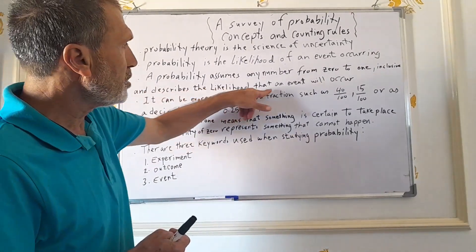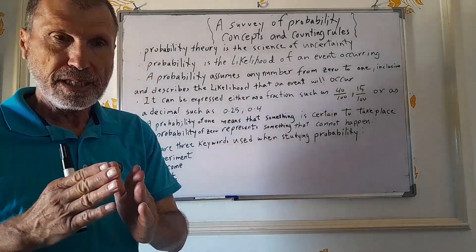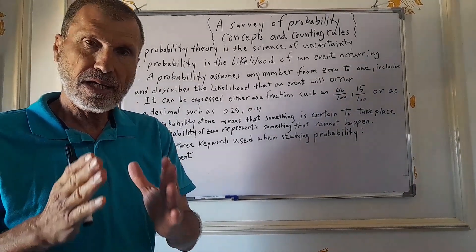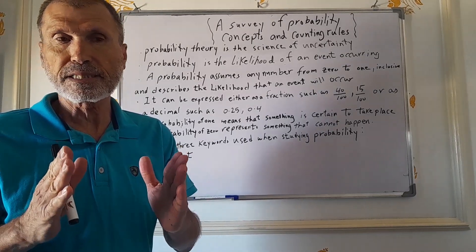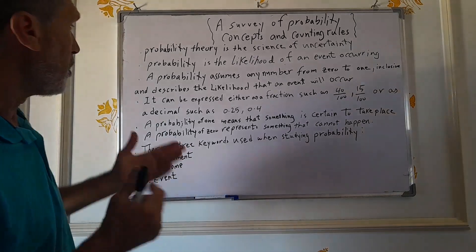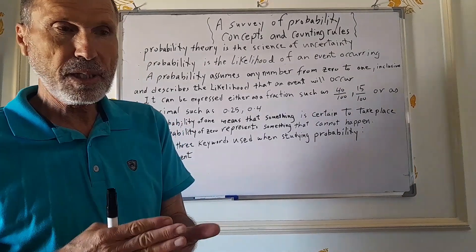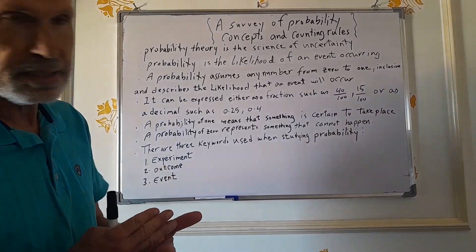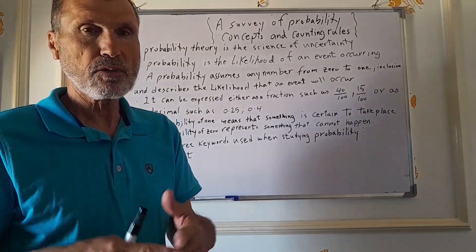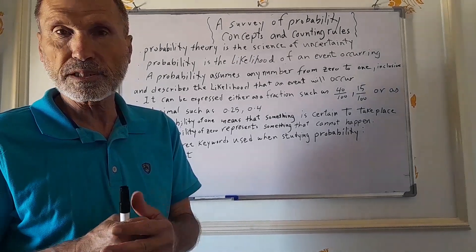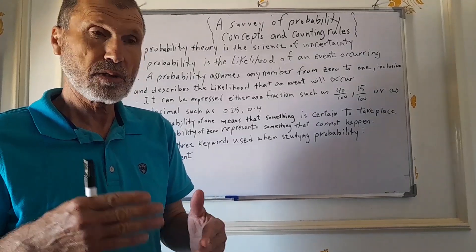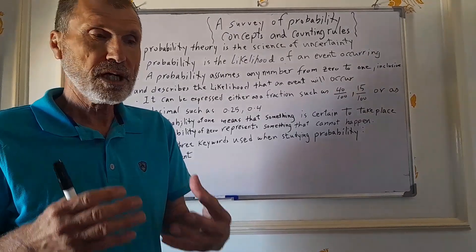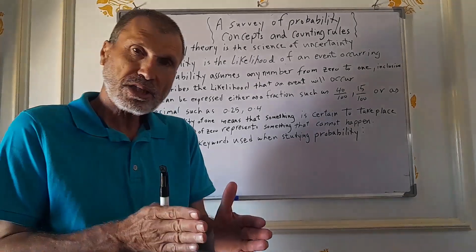Probability describes the likelihood that an event will occur. It is defined as the likelihood that an event will take place. The probability can be expressed as a fraction or as a decimal. For instance, the probability that something will take place is 0.1.